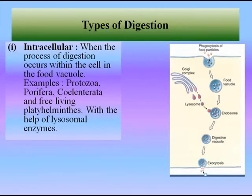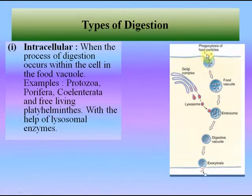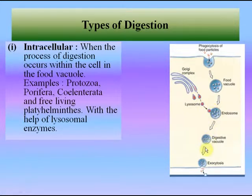Phagocytosis is the ingestion of solid particles by endocytosis. The cytoplasmic membrane invaginates and pinches off, making food vacuoles. The phagosome then fuses with a lysosome and the material is degraded. After absorption, these materials are excreted by exocytosis. So intracellular digestion is the cellular process of engulfing solid particles by the cell membrane to form an internal phagosome by phagocytes.